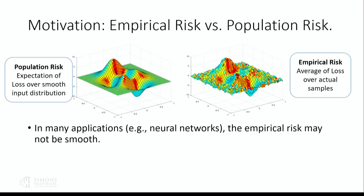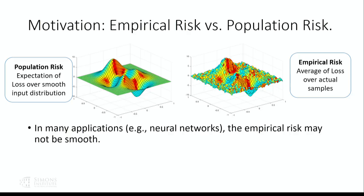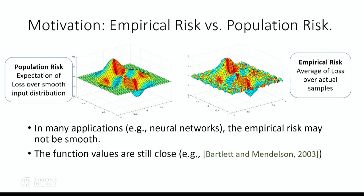The landscape of the empirical risk function can be very rough with many discontinuities in the gradient. In many applications — especially for neural networks — the empirical risk may not be smooth in the sense that its gradient does not have a Lipschitz property. That's because the activation function is often ReLU, and when you take the derivative of ReLU, it jumps from 0 to 1 when going from negative to positive. However, even though the empirical risk may not have smooth properties, we still know that with a large enough number of samples, the function values are pointwise close to each other by standard concentration results.